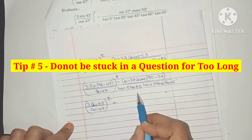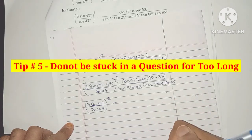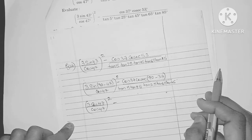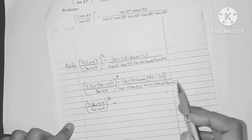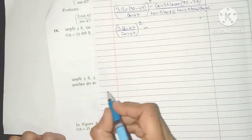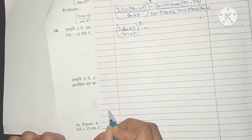The fifth tip is to not be stuck in any question for too long. Some questions can be really tricky and we may get stuck without any solution in sight. So in such situations, you just have to decide to leave adequate space for the answer and move on.